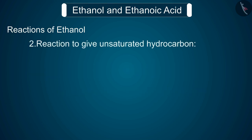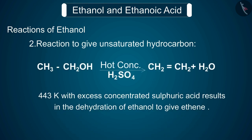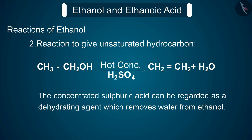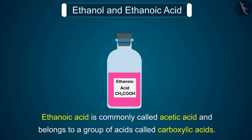Reaction 2: reaction to give unsaturated hydrocarbon. Heating ethanol at 443 K with excess concentrated sulfuric acid results in the dehydration of ethanol to give ethene. The concentrated sulfuric acid can be regarded as a dehydrating agent which removes water from ethanol. Ethanoic acid is commonly called acetic acid and belongs to a group of acids called carboxylic acids.